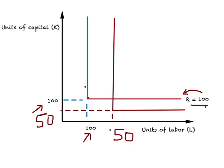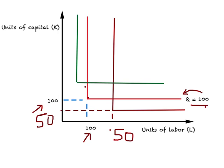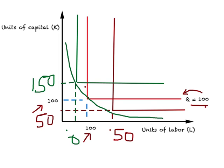Suppose you are given another technology — let us draw that. Here again you produce 100 units of output, but you are using fewer workers and more machines. So this could represent 50 workers and 150 units of capital. When you have different technologies available, there are different combinations of labor and capital you can use, and when you join all these points, what you get is a typical isoquant.